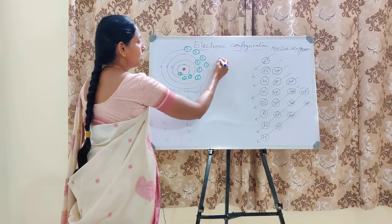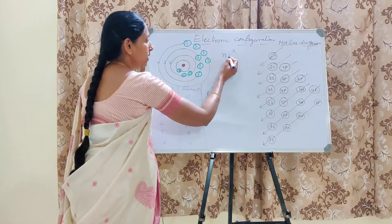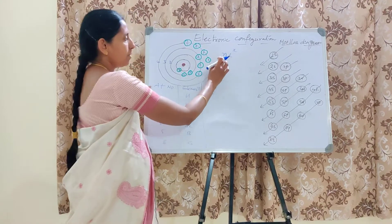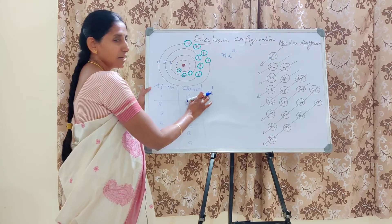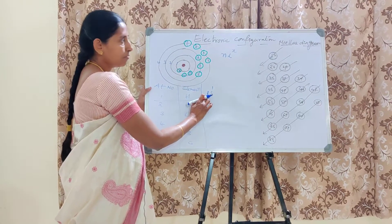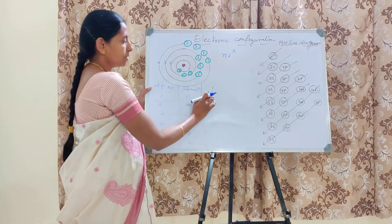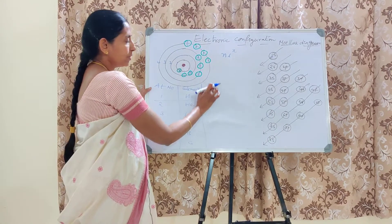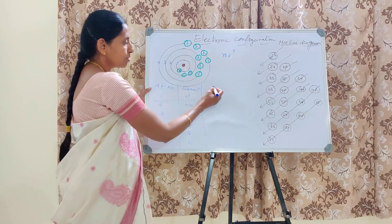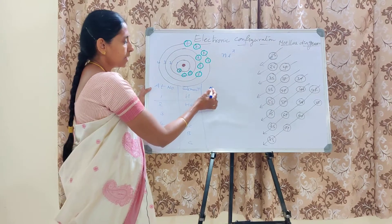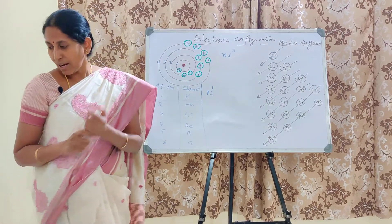Using the NLX formula, the electronic configuration is written: N means the number of the orbit — it is in the first orbit, so N equals 1. L indicates the subshell — it is in the S subshell. X is the power, indicating the number of electrons. Hydrogen has only one electron in 1S, so the configuration is 1S¹.